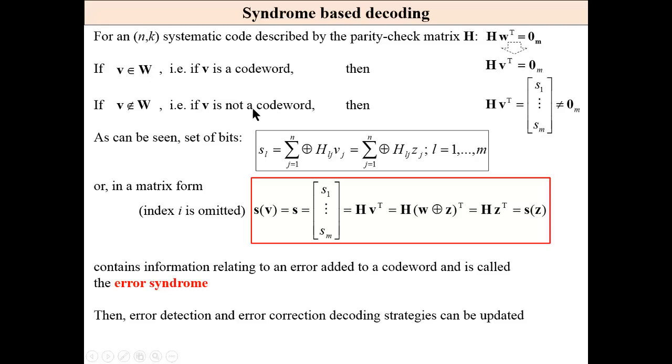If not, then we have an erroneous transmission. And this vector, column vector, is called a syndrome.